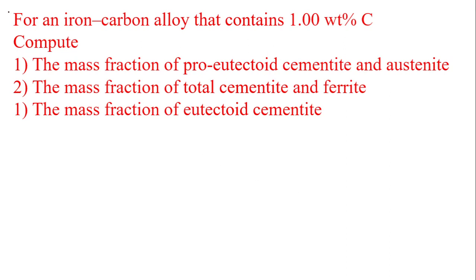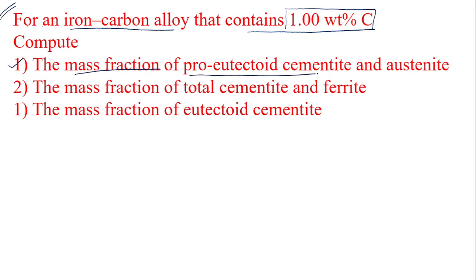So this is the question. Carefully read it: for an iron-carbon alloy that contains one weight percentage of carbon, we have to find — first, the mass fraction of pro-eutectoid cementite and austenite; second, the mass fraction of total cementite and ferrite; and third, the mass fraction of eutectoid cementite.